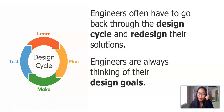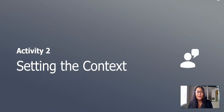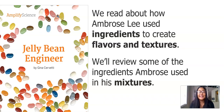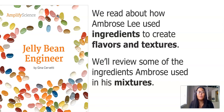In this next part of our lesson, we will set the context. In the last lesson, you read a book called Jelly Bean Engineer. You read about Ambrose Lee and how he used different ingredients to create flavors and textures of jelly beans. We're going to reread some parts and look at the ingredients he used in his mixtures.